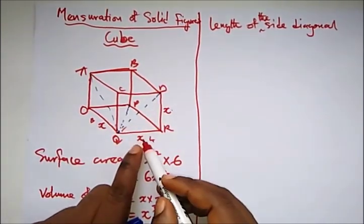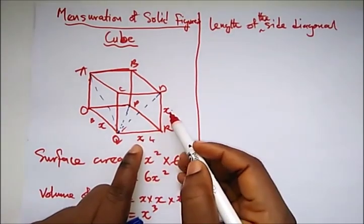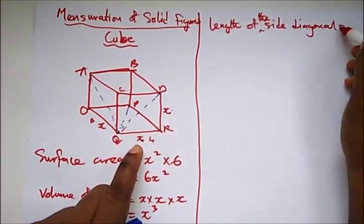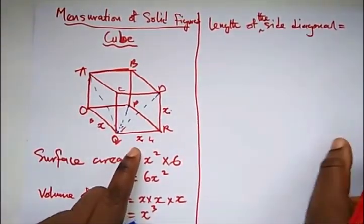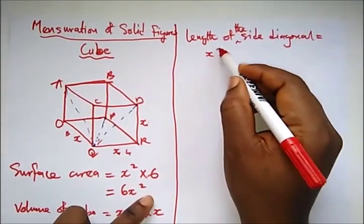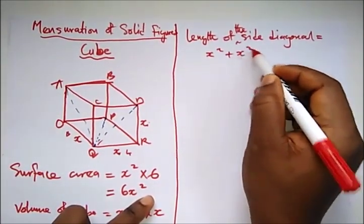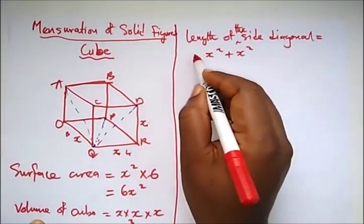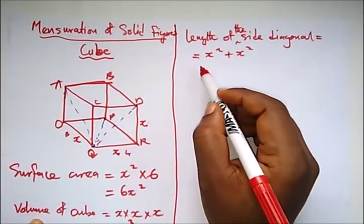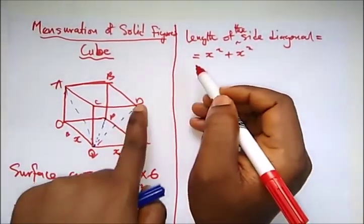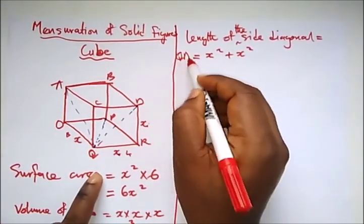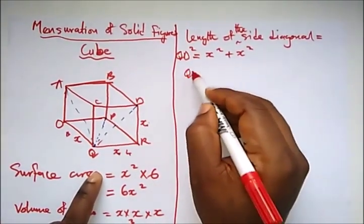I hope you remember our Pythagoras rule, which is what? x² - we are looking for the hypotenuse here, so which is what? x² plus x². So length of our diagonal, our side diagonal is what? x² plus x², right?